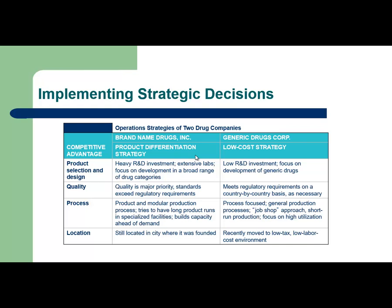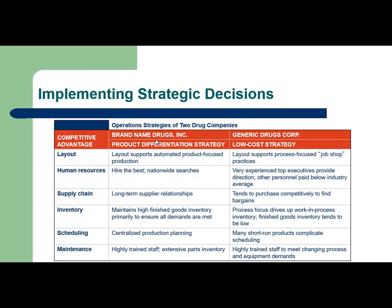Looking at the different decision areas — product selection and design, quality, process, location, layout, human resources, skills needed, supply chain, supplier selection, inventory, scheduling, and maintenance — each area has certain decisions. You can see the differences between low-cost strategy and product differentiation strategy in those areas based on the main strategy selected by the company.